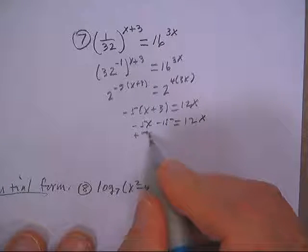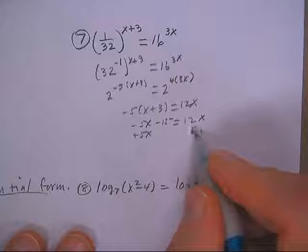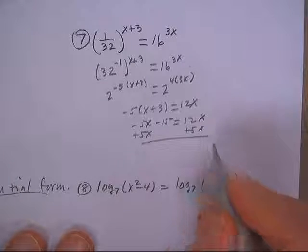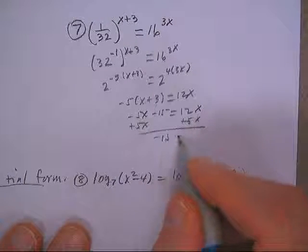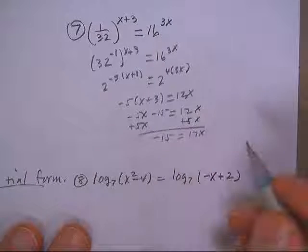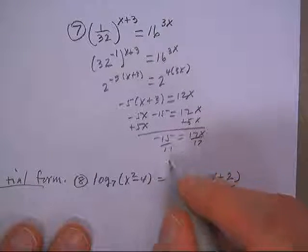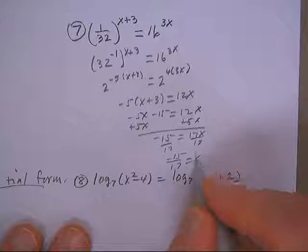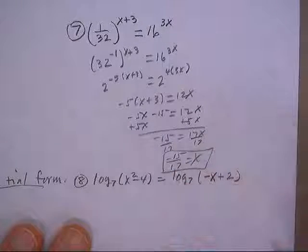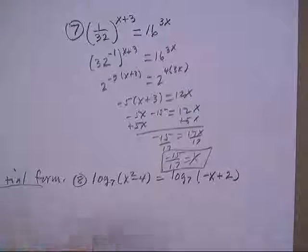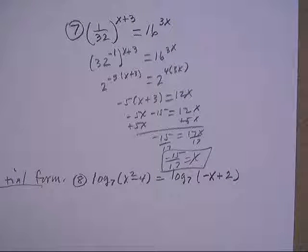Let's add 5x to both sides. Negative 15 equals 17x divided by 17. And x is negative 15 over 17. We're good on that one.